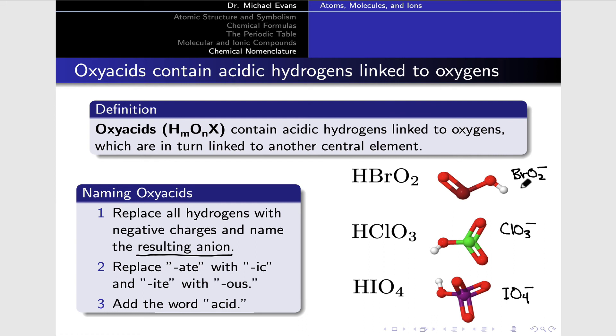BrO₂⁻ is bromite. ClO₃⁻ is chlorate. And IO₄⁻ is periodate - not to be confused with period eight - periodate.